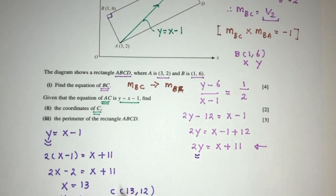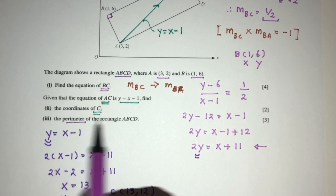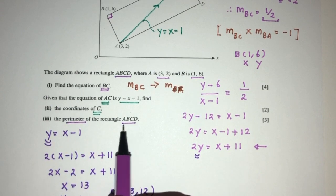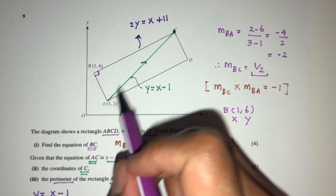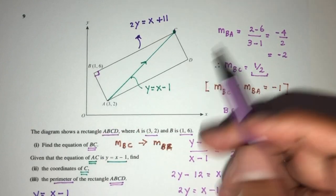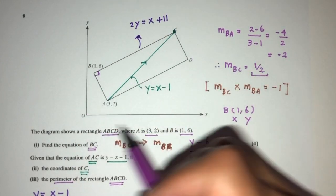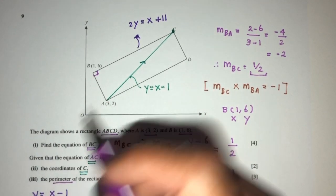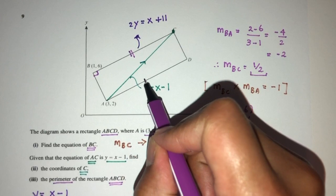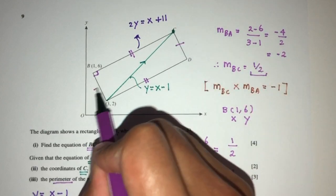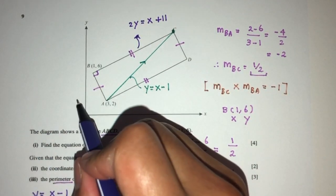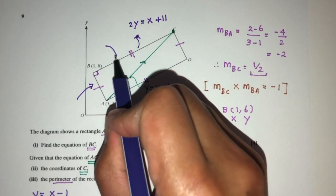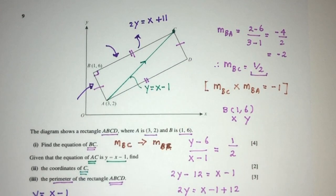Now for part 3 of the question, we have to find the perimeter of the rectangle ABCD. So perimeter is the distance around this rectangle. So we also understand that this side is the same as this and this is the same as this. So we can just find this and this and multiply by 2 to get the whole thing.